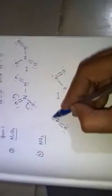Due to the presence of this unpaired electron, NO₂ is paramagnetic in nature and also exhibits color. Due to the presence of the unpaired electron, NO₂ gas is a brown color gas. Next: N₂O₄, Dinitrogen Tetroxide.